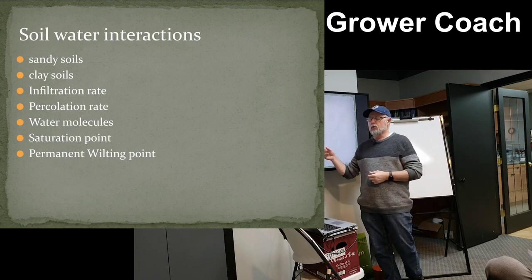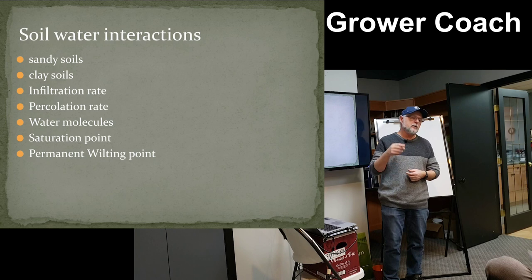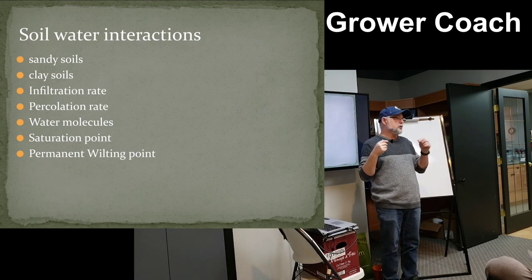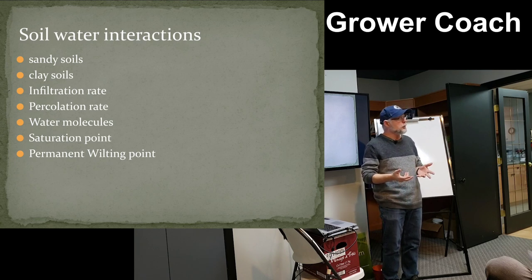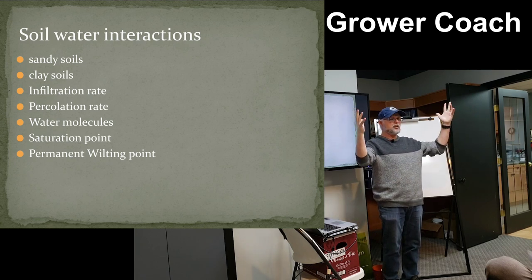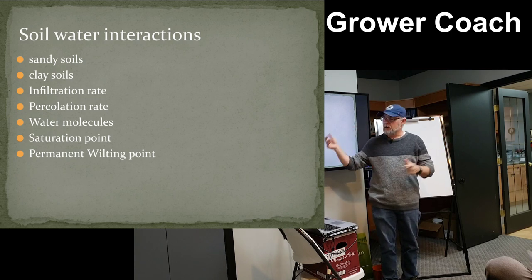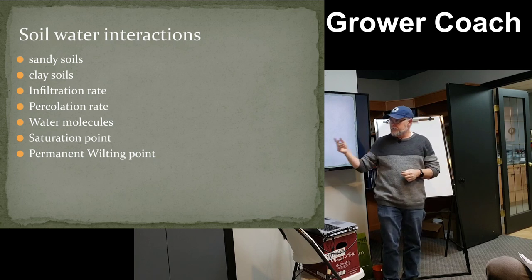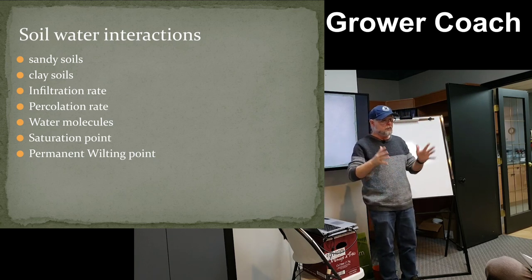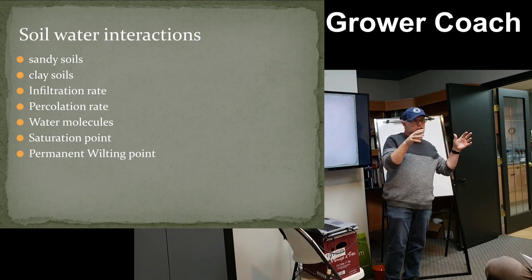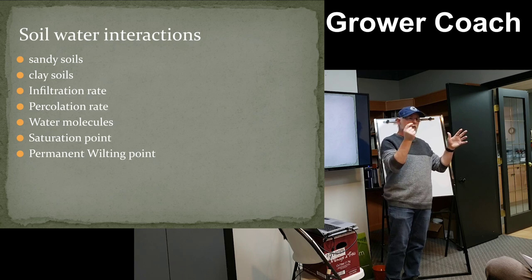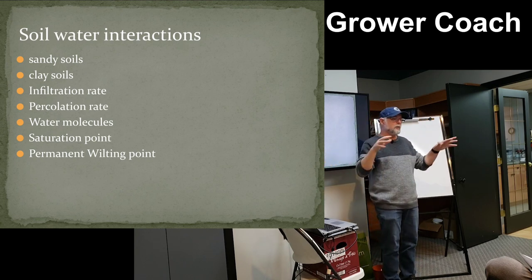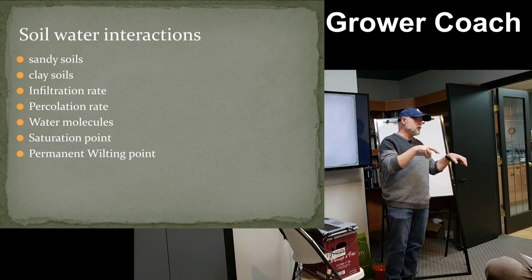The permanent wilting point doesn't necessarily mean it's going to kill the plants. When a plant wilts, it loses its turgor pressure — turgor is when a plant is firm and has good pressure. As it starts running out of water it begins to wilt. You want to catch it at the very early stages of wilting. If you let it wilt completely, that's what they call the permanent wilting point, and that's when you see actual damage on the plants.